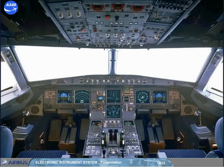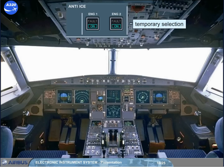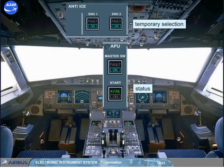On the overhead panel, some push button switches are used on a temporary basis or may have an indication of their state. The logic is: temporary selection for operational reasons — blue on light, for example anti-ice. Applicable system status — green light, for example APU available. You will see this philosophy demonstrated throughout the course.